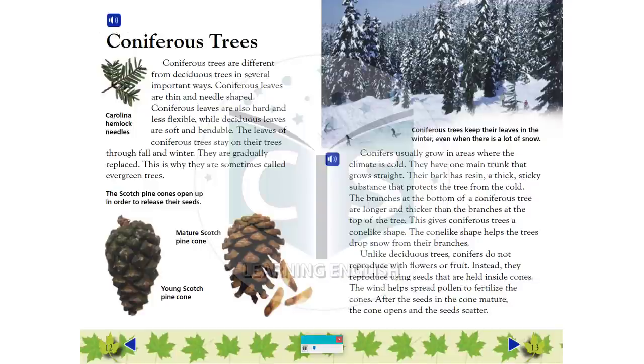Coniferous Trees: Coniferous trees are different from deciduous trees in several important ways. Coniferous leaves are thin and needle-shaped. Coniferous leaves are also hard and less flexible, while deciduous leaves are soft and bendable. The leaves of coniferous trees stay on their trees through fall and winter. They are gradually replaced. This is why they are sometimes called evergreen trees.